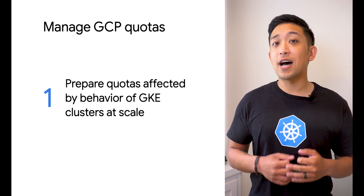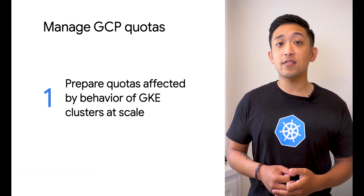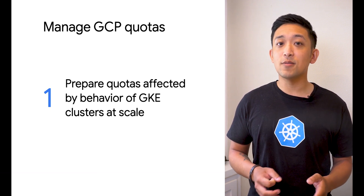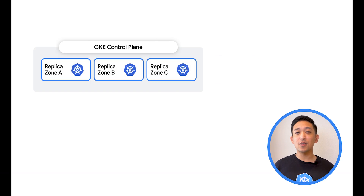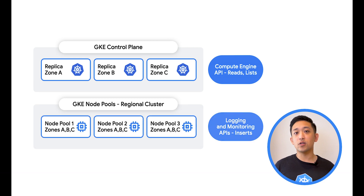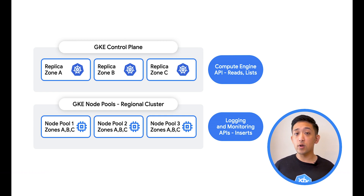GCP quotas are the consideration for how your GKE cluster interacts with various quotas or limits in GCP at scale. Two of the places to start would be adjusting the Compute Engine API and the logging and monitoring APIs. As your cluster gets larger, there are more read or list requests made to the Compute Engine API from the GKE cluster. Similarly, the more workloads you run in your node pools, the more logs and metrics are inserted into Google Cloud Operations.